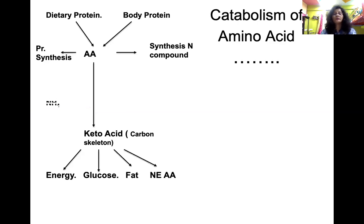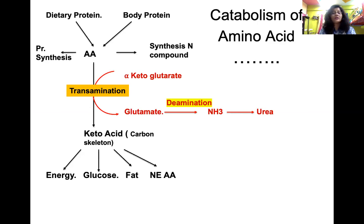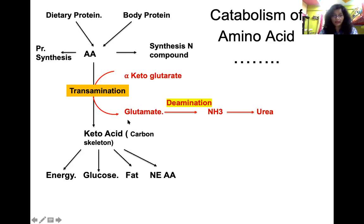The process is known as transamination. By its literal meaning, transamination is the transfer of an amino group — specifically, the transfer of an amino group from an amino acid to a keto acid, leading to the formation of a new pair of keto acid and amino acid.